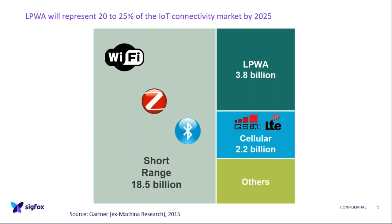LPWA is set to represent between 20 and 25 percent of the IoT market by 2025, according to Machina Research, later acquired by Gartner. The numbers are a little outdated but the percentage remains the same. LPWA is going to be a big player in the IoT landscape — bigger than cellular because cellular is very expensive — while short-range applications use Bluetooth, Wi-Fi, and Zigbee.